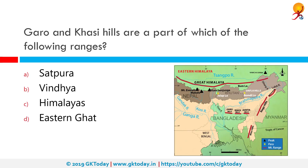Garo and Khasi hills are part of which of the following ranges? The correct answer is the Himalayas. The Garo hills are part of the Garo-Khasi range in Meghalaya, India, and are inhabited mainly by tribal dwellers, the majority of whom are Garo people. The Khasi hills are located east of the Garo hills. The Khasi people are an indigenous ethnic group of Meghalaya in northeast India, with a significant population in the bordering state of Assam and in certain parts of Bangladesh.